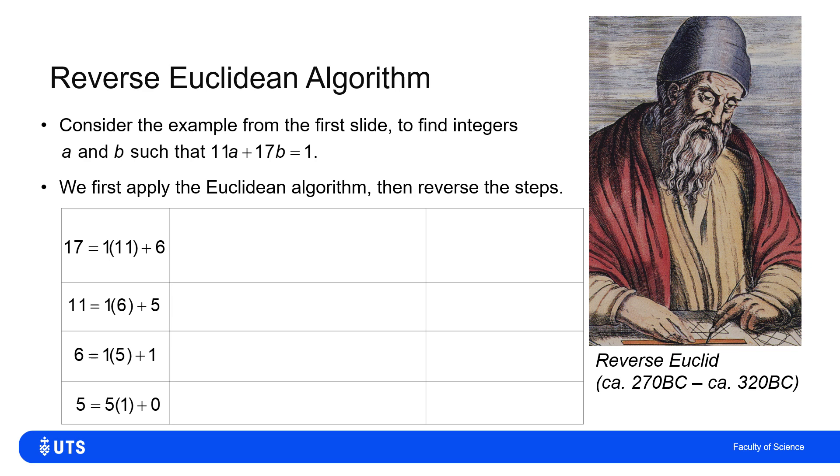The fact that my last non-zero remainder was 1 tells me that this is possible. I've gone all the way down and now want to go back up. I need to express the last remainder 1 as a multiple of 5s and 6s, so reversing the first column gives me that 1 is 6 minus 5.